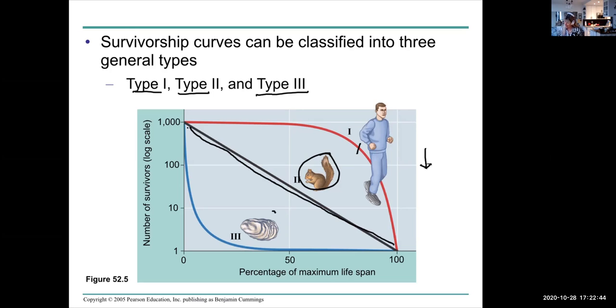The squirrel we just saw had Type II survivorship—even number of deaths per year. Other organisms like this oyster have a different kind of survivorship. There's lots and lots of deaths in the beginning, but some individuals live for quite a long time. This is percentage of lifespan, by the way, here.